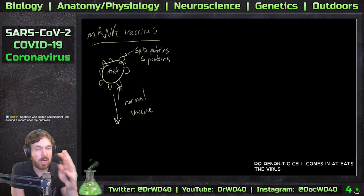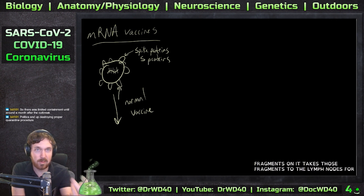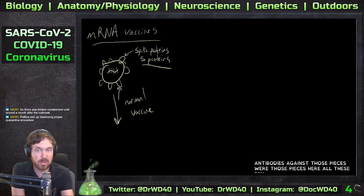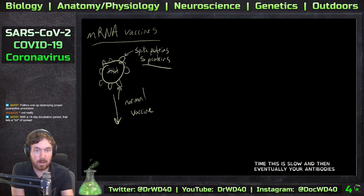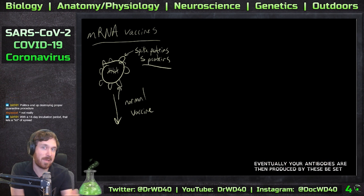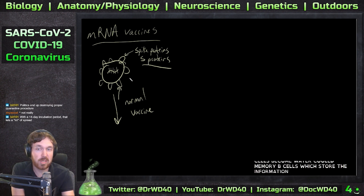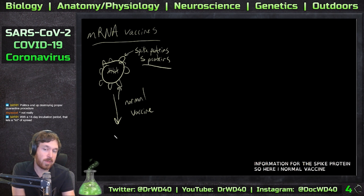The dendritic cell eats the virus, chops it up, presents fragments on it, takes those fragments to the lymph nodes, and presents them to B cells and T cells. B cells then produce antibodies against those pieces — the spike proteins. This takes time, it's slow. Eventually antibodies are produced by B cells, which become what are called plasma cells.